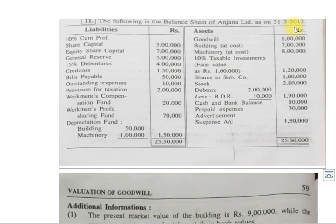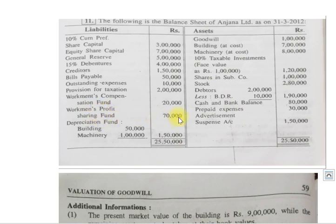Example number 11: The following is the balance sheet of Anjana Limited as on 31st March 2012. On the liability side: 10% cumulative preference share capital ₹3 lakhs, equity share capital ₹7 lakhs, general reserve ₹5 lakhs, 15% debentures ₹4 lakhs, creditors ₹1 lakh 50,000, bills payable ₹50,000, outstanding expenses ₹10,000, provision for taxation ₹2 lakhs, workmen's compensation fund ₹20,000, workmen's profit sharing fund ₹70,000, depreciation fund - building ₹50,000, machinery ₹1 lakh. Total ₹1 lakh 50,000.